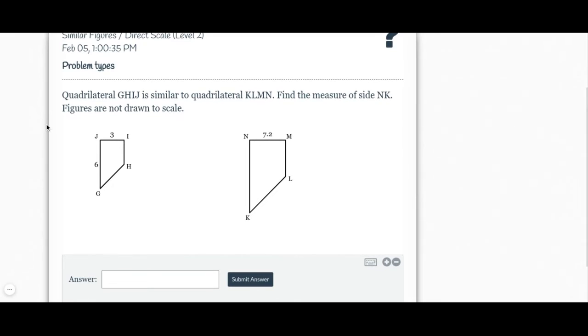Here's another example. Quadrilateral GHIJ is similar to quadrilateral KLMN. Find the measure of side NK. Figures are not drawn to scale.